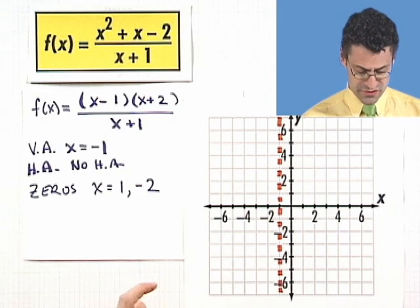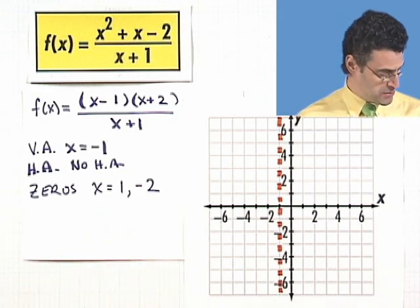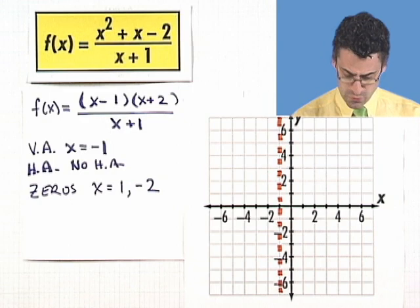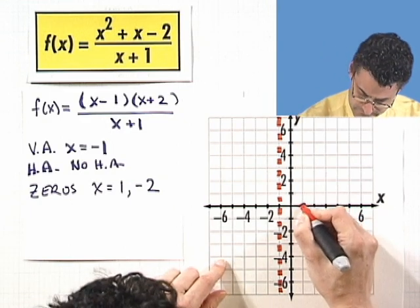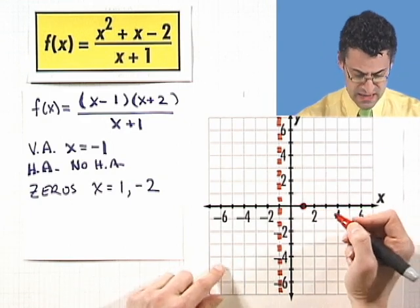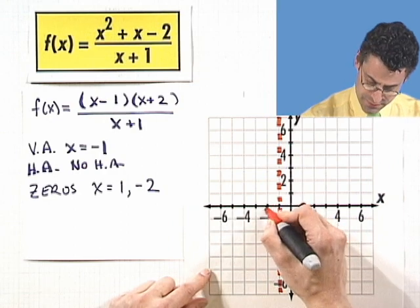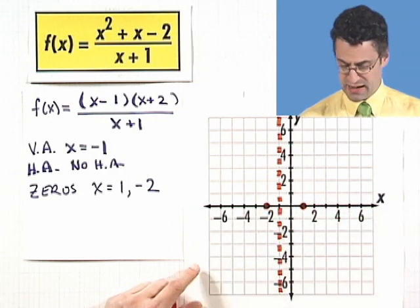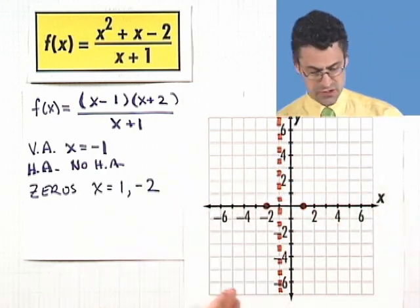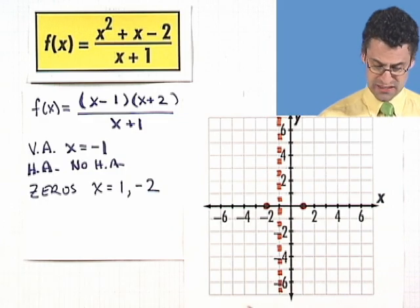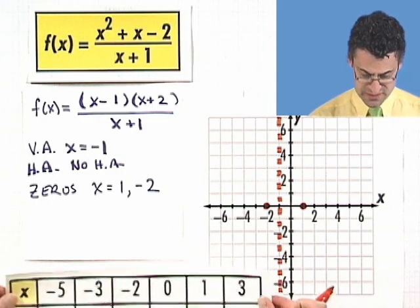Now, what do we know? We have zeros, so we know that x equals 1 is a 0, and x equals negative 2 is a 0. And now I know I'm going to be approaching this asymptote, but I don't know how, and that's where these points come in handy. Let's plot some of these points.